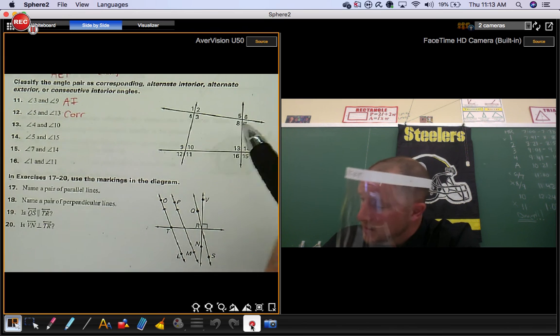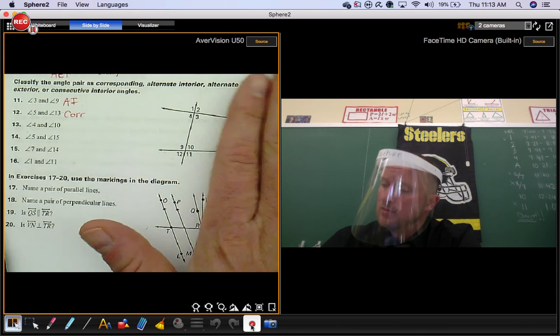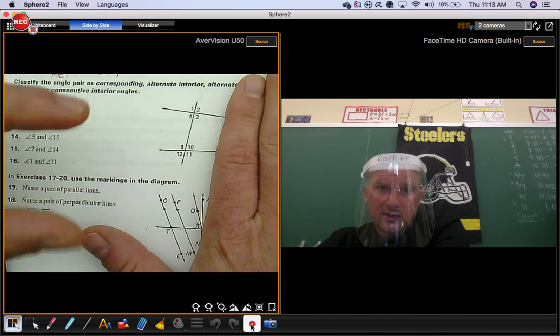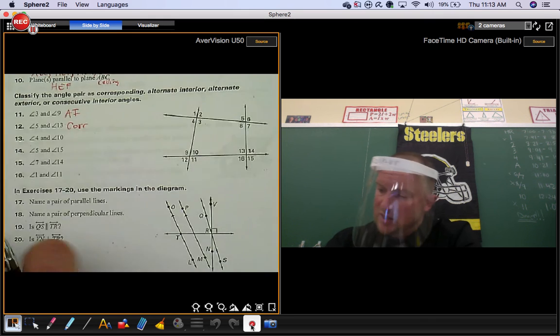Number 13, angle 4 and angle 10, that's another example of alternate interior angles. They're in between the lines, different sides of the transversal.